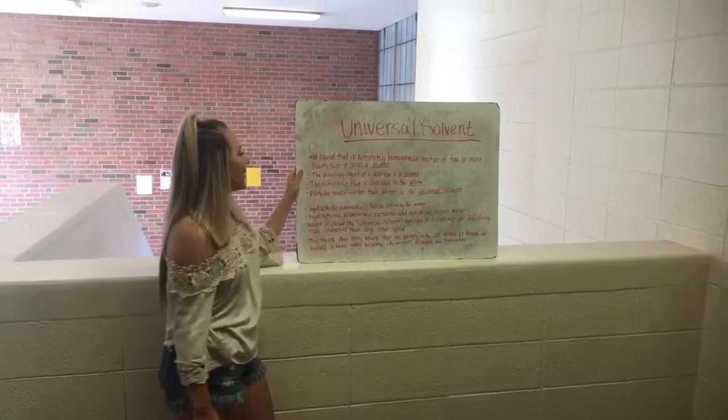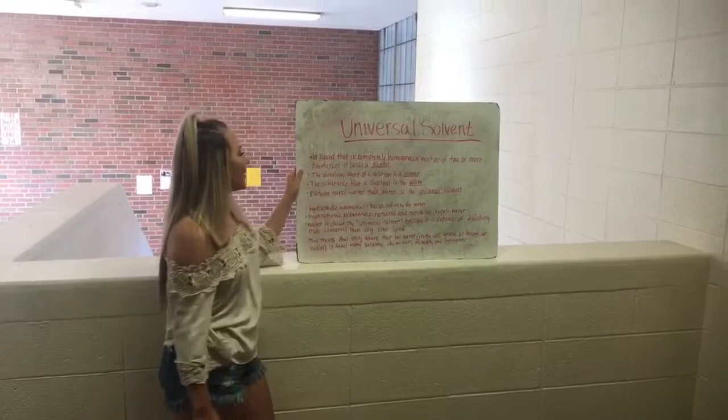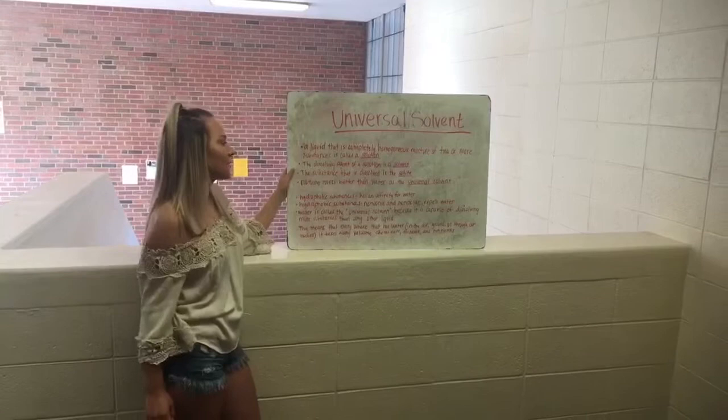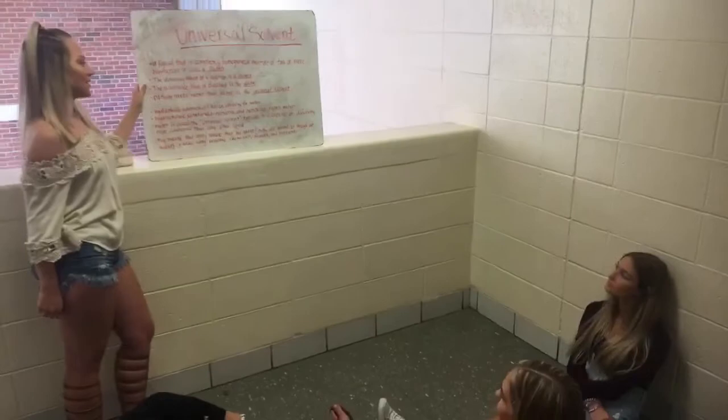Chapter 1 is about the universal solvent. A liquid that is a completely homogenous mixture of two or more substances is called a solution. The dissolving agent in the solution is the solvent. The substance that is dissolved is the solute. And nothing works better than water as a universal solvent.